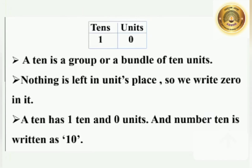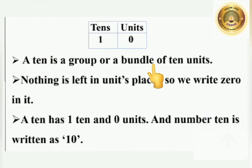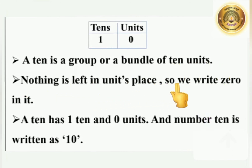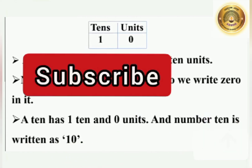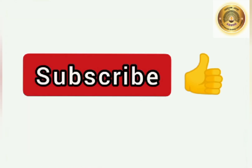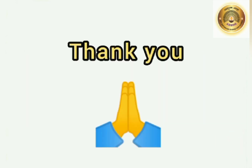Today in the class we learned about tens. So let's revise: a 10 is a group or bundle of 10 units. Nothing is left in the units place, so we write 0 in it. A 10 has 1 ten and 0 units, and the number 10 is written as 10. Hope you all understood today's class. If you liked my video, don't forget to subscribe to our channel. Thank you.